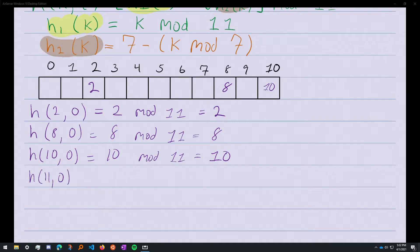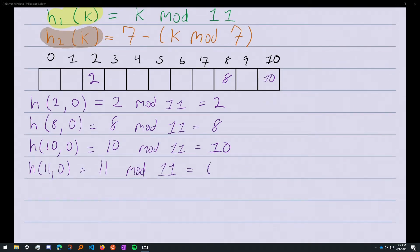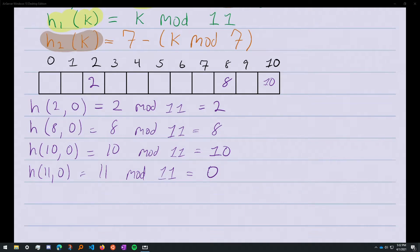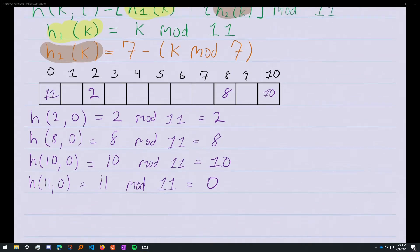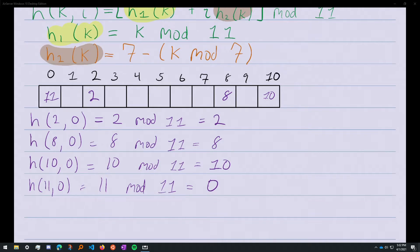h(11,0) equals 11 mod 11, which equals 0. We know 11 divided by 11 produces no remainder. So far we've gotten it easy.